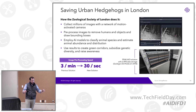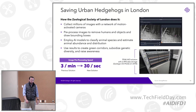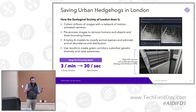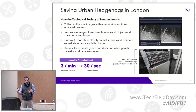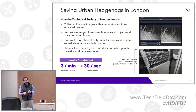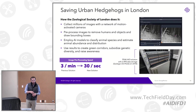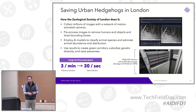They partnered with Peak AIO and with us. They have a network of motion-activated cameras generating millions of images — capturing every person, car, or gust of wind. They take that raw data through the preprocessing stage, filter out humans and objects, draw bounding boxes around animals in the image, then feed it into an AI model to classify species and build a picture of animal abundance and geographic distribution.